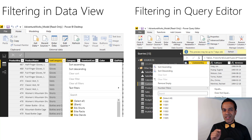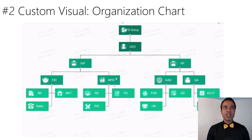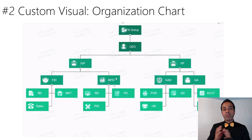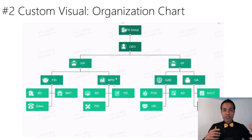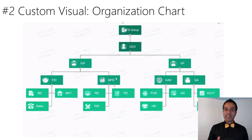Number two: a custom visual — the organization chart. Normally I don't talk about custom visuals because I'm a Stephen Few fan — less is more, economy of pixel. Simple elements like column charts, line charts, bar charts, and tables, combined with thought and planning, can create the best dashboards. I usually stay away from custom visuals because they can be very whiz-bangy, but I think the org chart visual is genuinely cool.